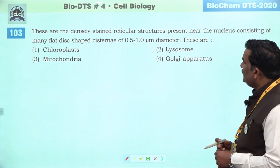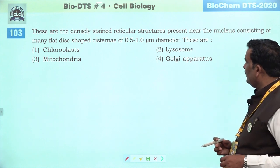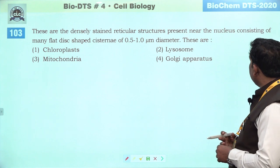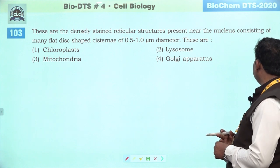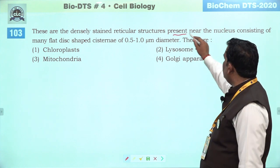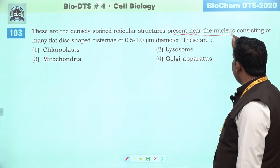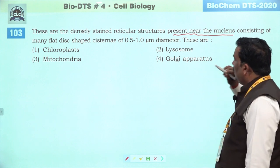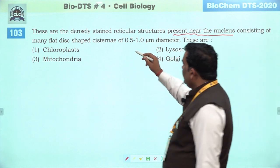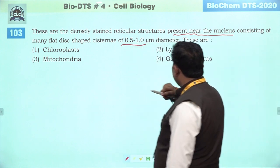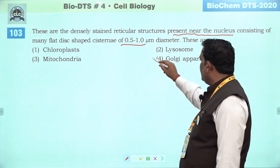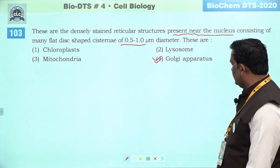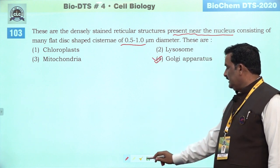Next question: these are densely stained reticular structure which is near the nucleus — Golgi body ki concept ja rahi hai. Aur inمیں jo systematic diameter hai, NCRT mein digit di gayi hai. Isliye Golgi apparatus humare paas ek achha answer hai.